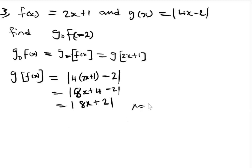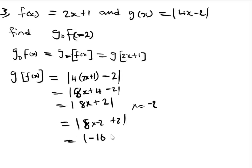Substituting x = −2 into 8x + 2: we get 8 × (−2) + 2 = −16 + 2 = −14. Because of the absolute value sign (magnitude), our final answer is 14.